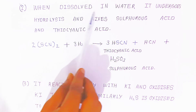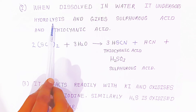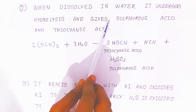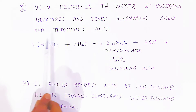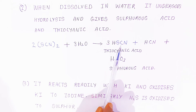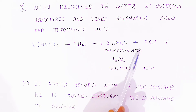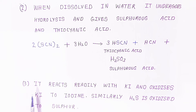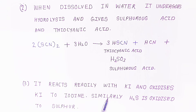When dissolved in water, thiocyanogen undergoes hydrolysis, giving sulfurous acid and thiocyanic acid. It also reacts readily with potassium iodide, oxidizing potassium iodide to iodine. Similarly, hydrogen sulfide is oxidized to sulfur.